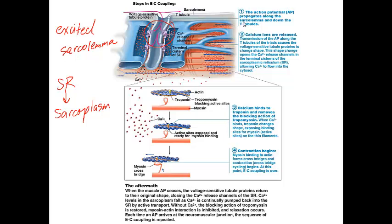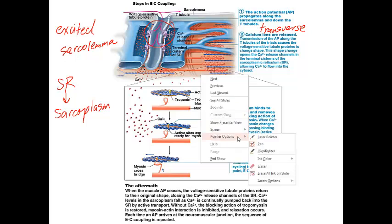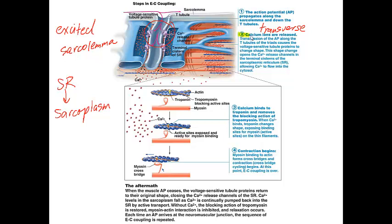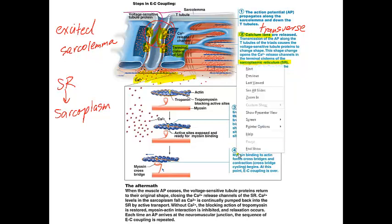The action potential propagates along the sarcolemma and down the T-tubules, also called transverse tubules. Once the signal reaches this specialized area, calcium ions are released from where they are stored — the sarcoplasmic reticulum. The sarcoplasmic reticulum is the calcium storage area, and the regions of the sarcoplasmic reticulum that touch the T-tubules are the terminal cisterns. Once the action potential reaches this area, calcium is released from the sarcoplasmic reticulum into the sarcoplasm.